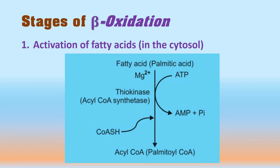When palmitic acid is converted into palmityl-CoA, one ATP is utilized and one AMP is produced. This means two ATPs are consumed in total, because ATP is first converted to ADP and then ADP to AMP, with production of two inorganic phosphate molecules. This is therefore an energy-consuming step during fatty acid oxidation.